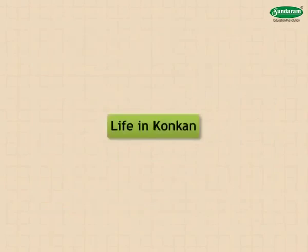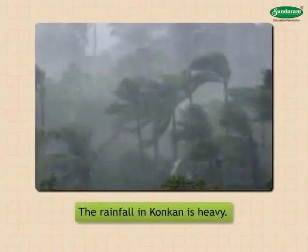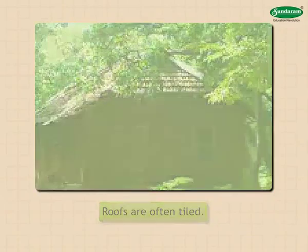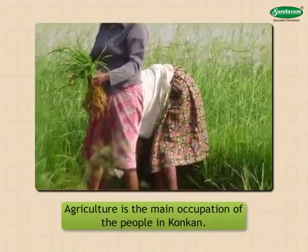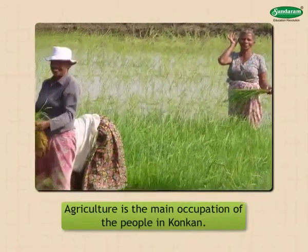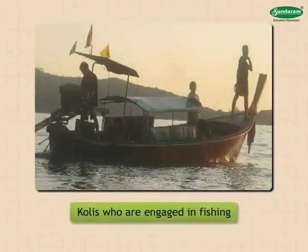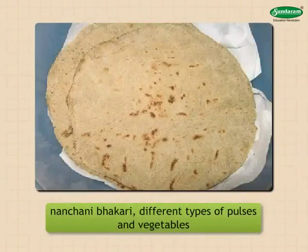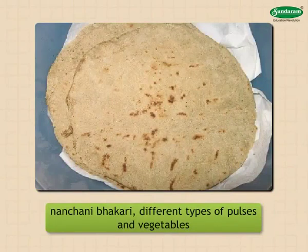Life in Konkan: the rainfall in Konkan is heavy; hence, the houses in this region have slanting roofs, which are often tiled. In some places, laterite bricks are used for building walls. Agriculture is the main occupation of the people in Konkan. Along the coast, there are a number of settlements of Kolis who are engaged in fishing. Rice is a major crop of the Konkan region and forms the staple diet of the people. Their diet also includes Nachni Bhakri, different types of pulses and vegetables.